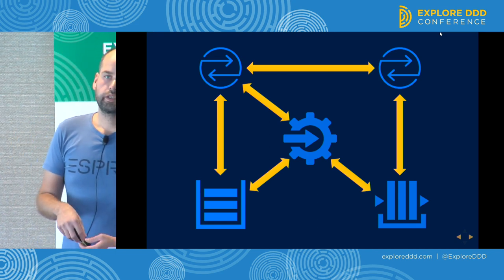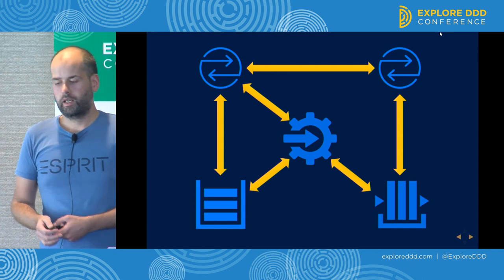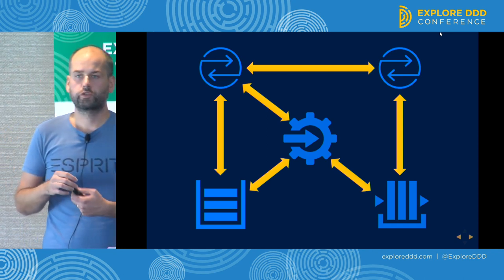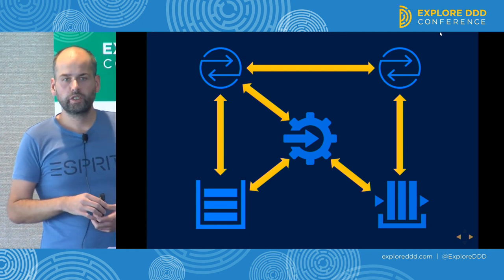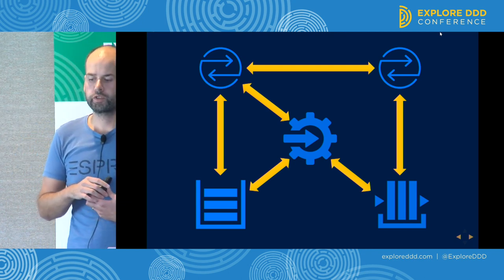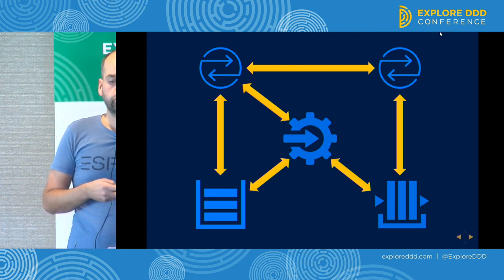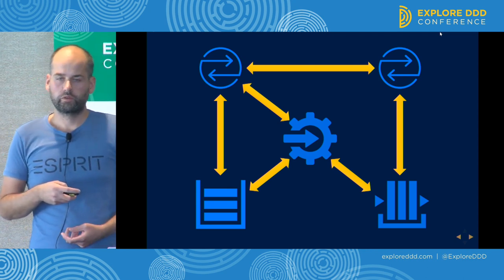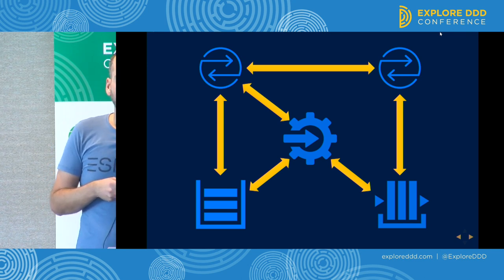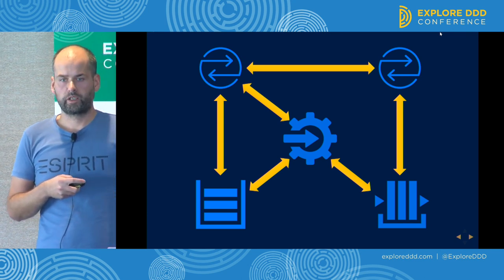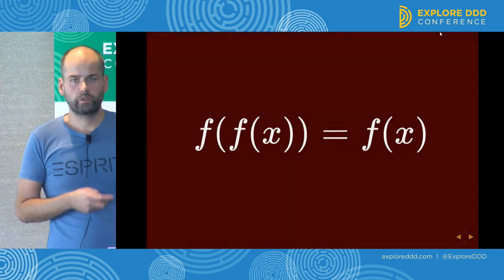The blue team was happy — they didn't need to modify any code. They just needed to use the distributed transaction coordinator built into the Windows operating system. It looks a bit more complex when you draw the distributed transaction coordinator on the slide. It's not as easy as two-phase commit in theory, because those distributed transaction coordinators need to talk to each other. Meanwhile, the red team was still struggling with idempotence.